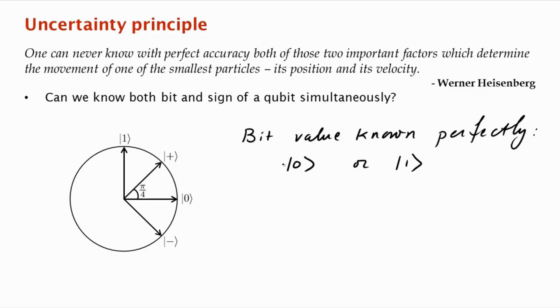What about for the sign value to be known perfectly? So for the sign value to be perfectly known, it must be in the state plus or minus.